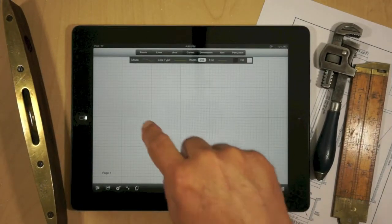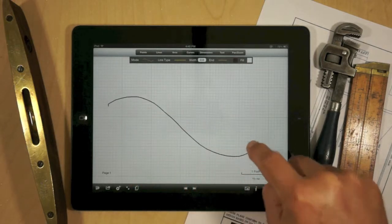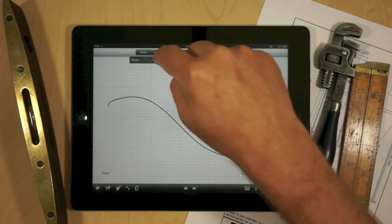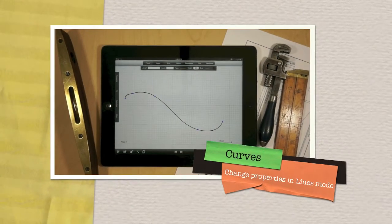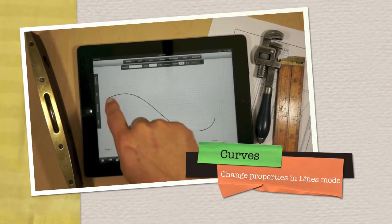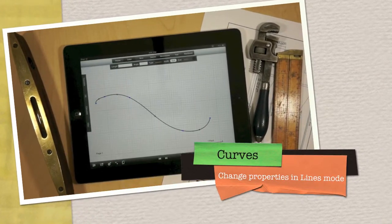Bezier curves allow you to create smooth curves. A Bezier curve actually consists of multiple curved segments. To see those, go into lines mode. In which case, you'll see the two end points and then the center handle which allows you to manipulate it.